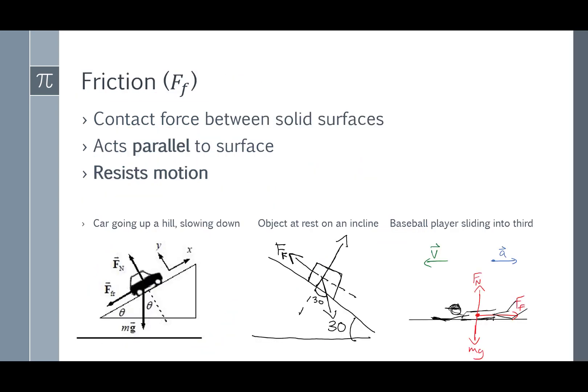Friction. Friction tries to slow objects down. It tries to resist motion. The variable for friction is Ff, or at least that's what we'll use for now. It's also a contact force between solid surfaces, but it acts parallel to the surface, not perpendicular. And it always tries to resist sliding motion.